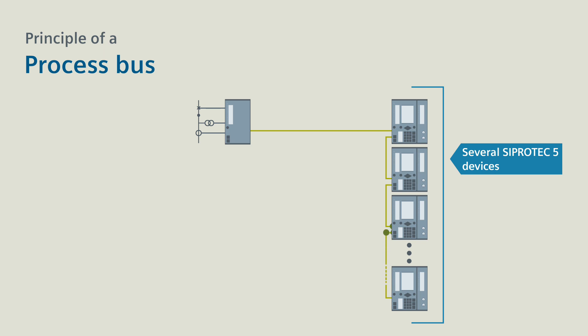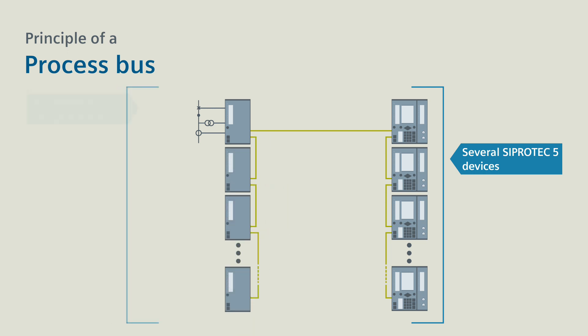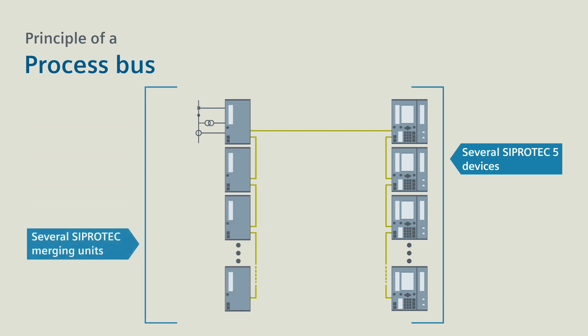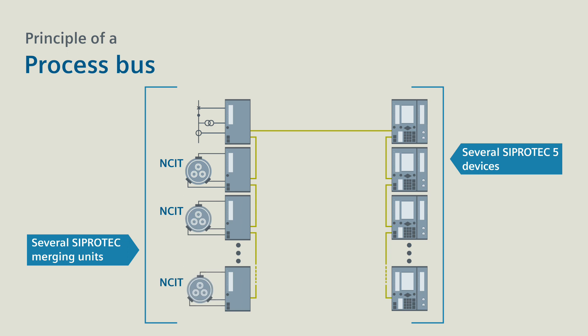Communication also works in the opposite direction. The CProtek merging unit then outputs commands to the switching devices. You can connect further CProtek merging units to the process bus, for example for non-conventional instrument transformers in air-insulated and gas-insulated high-voltage switchgear.